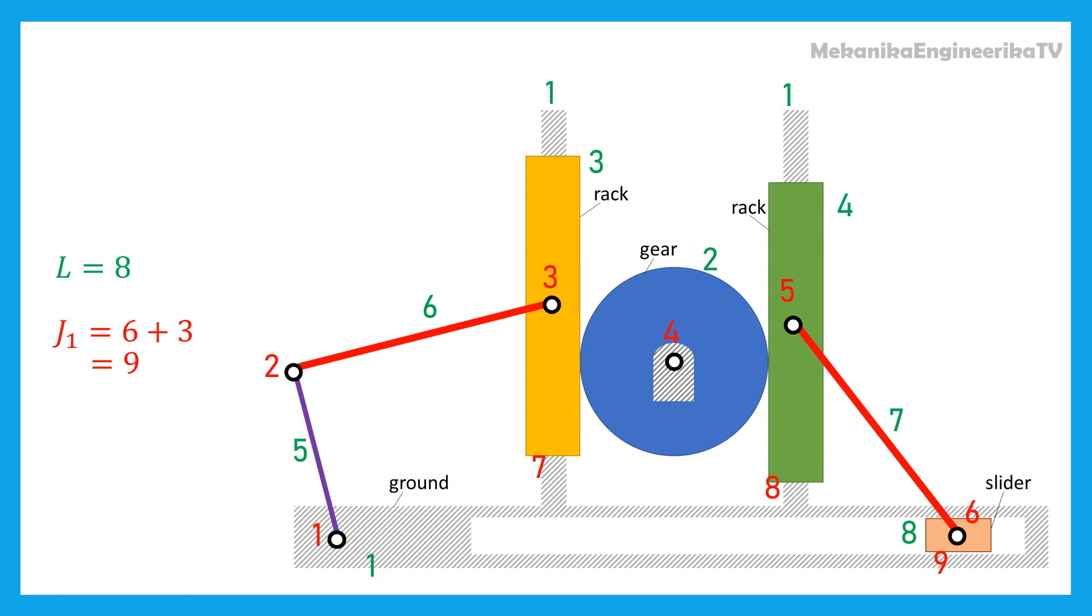The mechanism involves also 2 higher kinematic pairs, as there is a gear connection between the central gear and each rack.